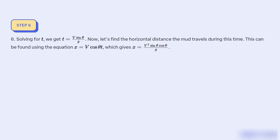6. Solving for t, we get t equal to V sin θ divided by g. Now, let's find the horizontal distance the mud travels during this time. This can be found using the equation x equal to V cos θ t, which gives x equal to V² sin θ cos θ divided by g.